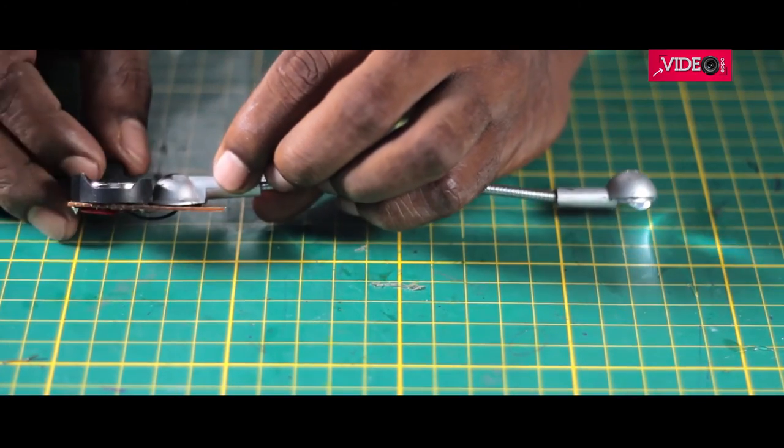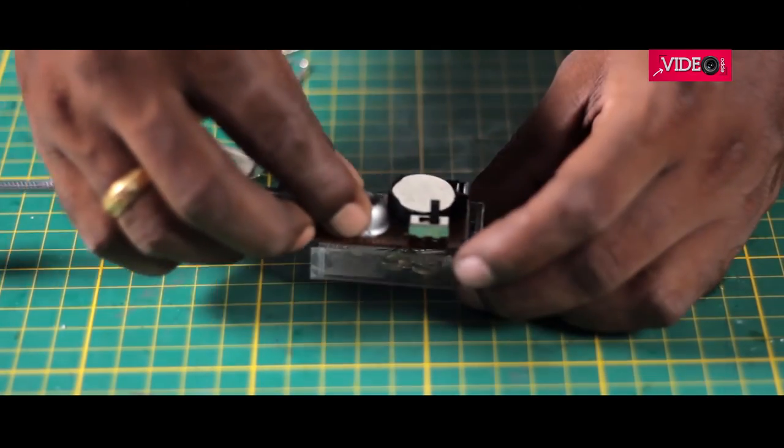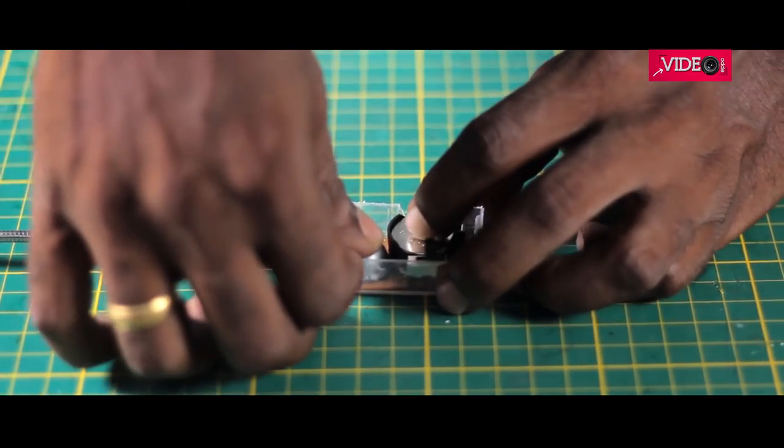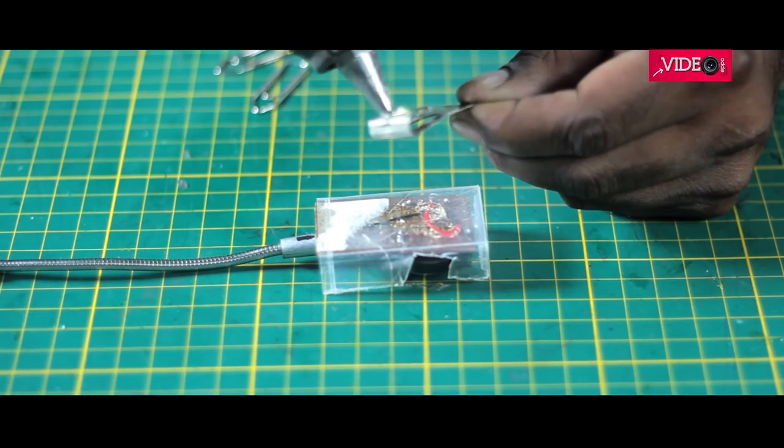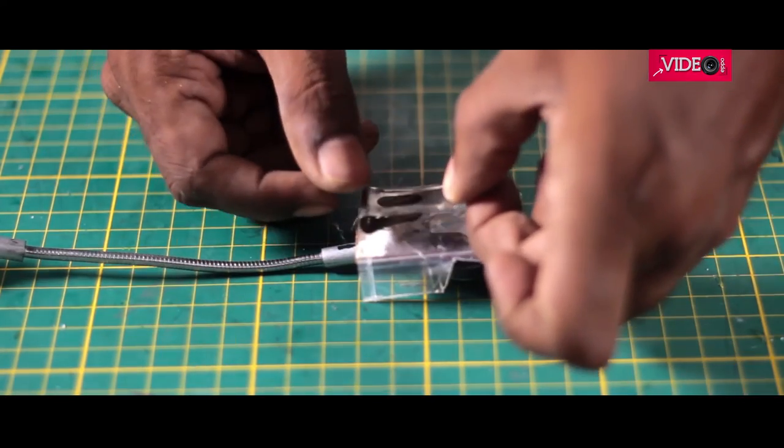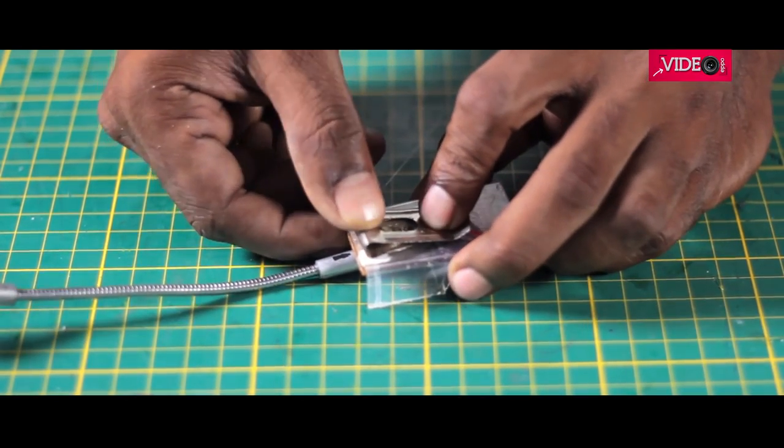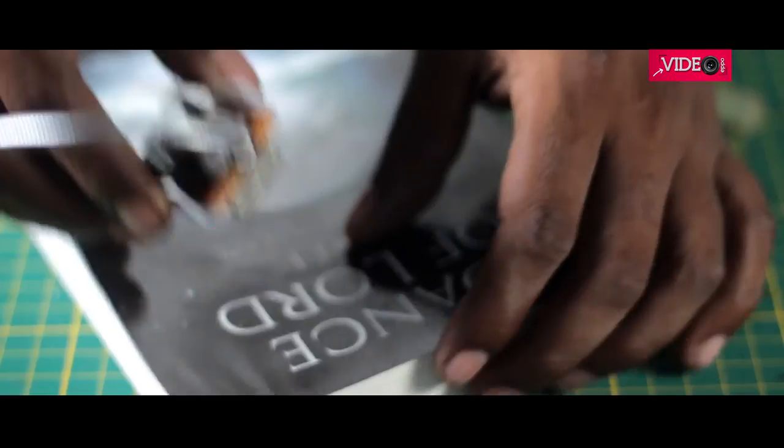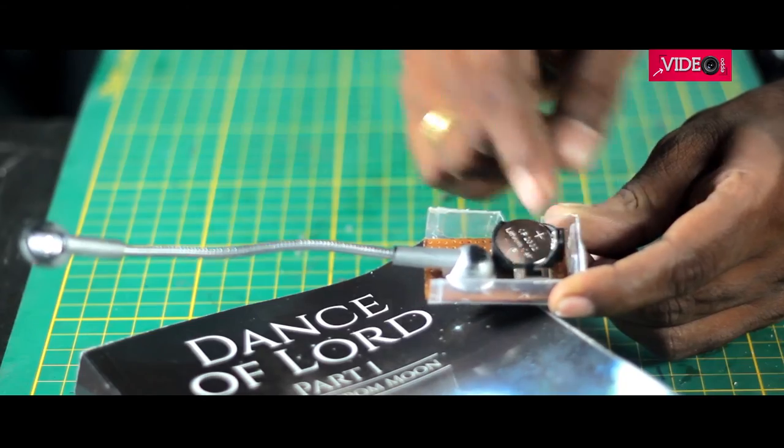Then I cut a tic-tac box. It was hot glued and the circuit was stuck onto it to protect the connections. Then a photo frame clip was hot glued onto the tic-tac box. Now our book light can be clipped onto the pages of the book and the light can be positioned accordingly.